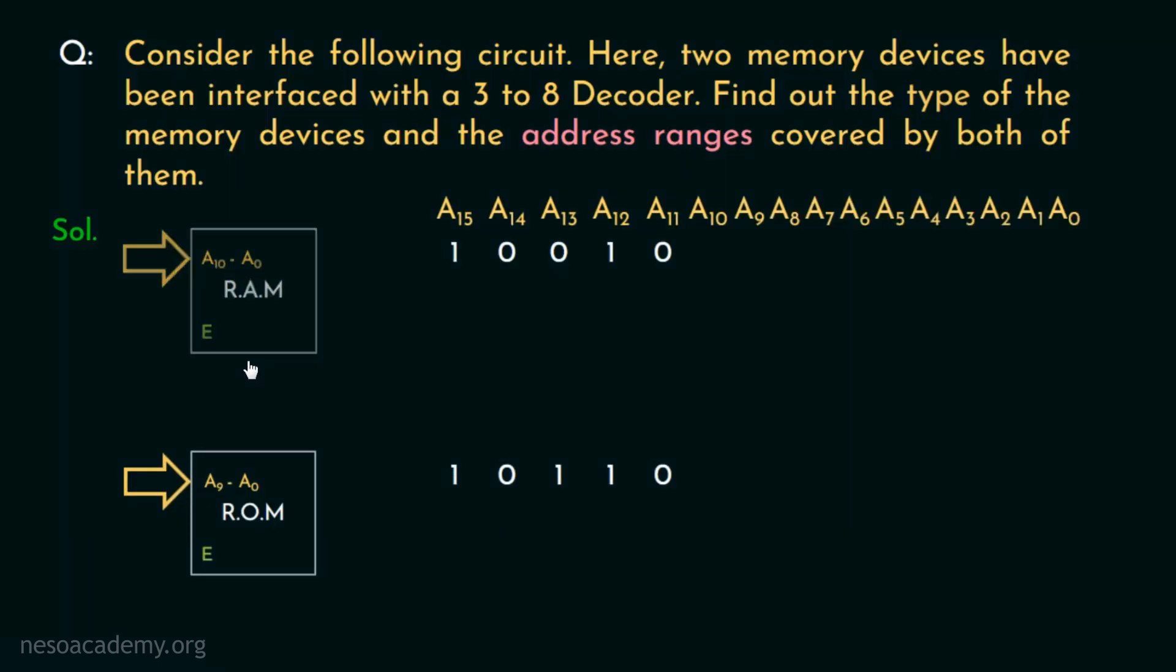Let's consider the RAM first. Since the address lines A10 to A0 are given to it, the first address covered by it will have all zeros in these bit places from A10 to A0. And eventually, the last address to be covered by RAM will have all ones for the bit places A10 to A0. And what about the address lines A15 to A11? Well, they will remain the same. Now these are 16-bit addresses. So it will be easier for us to remember them if we convert these to hexadecimal.